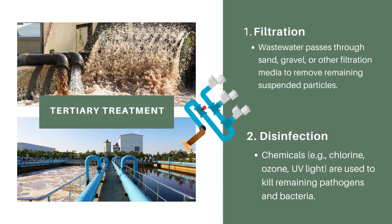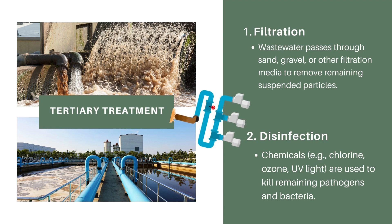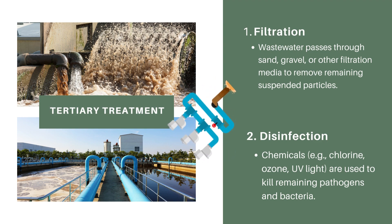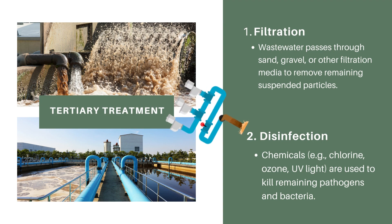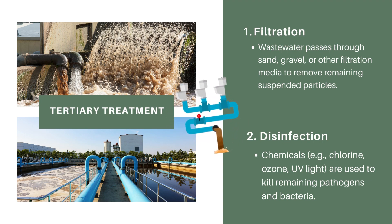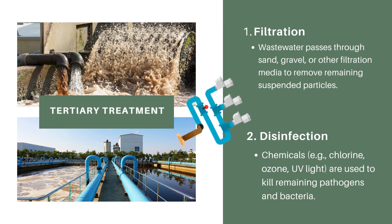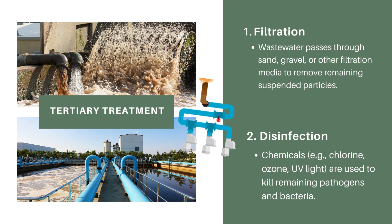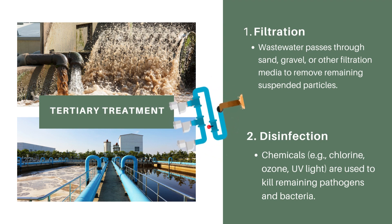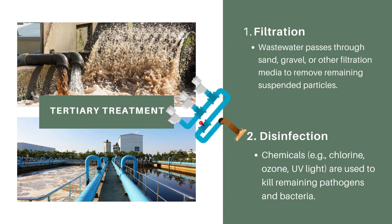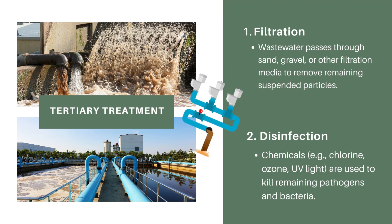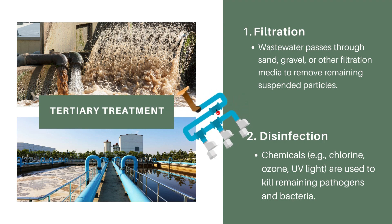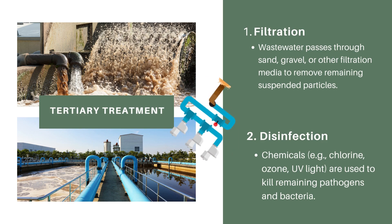Tertiary treatment consists of two processes: filtration and disinfection. In filtration, we have soup that's getting really clean. We want to get rid of the last little bits we don't want. We pass the water through filters made of sand, gravel, and other materials to catch those super small bits and make our water even clearer. In disinfection, our water is almost ready, but we need to be sure it's safe. We use special chemicals like chlorine, ozone, or UV light to kill any remaining harmful substances like germs and bacteria, making our water super safe to use.